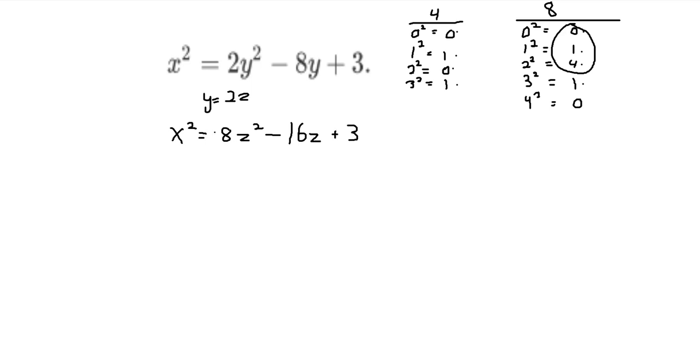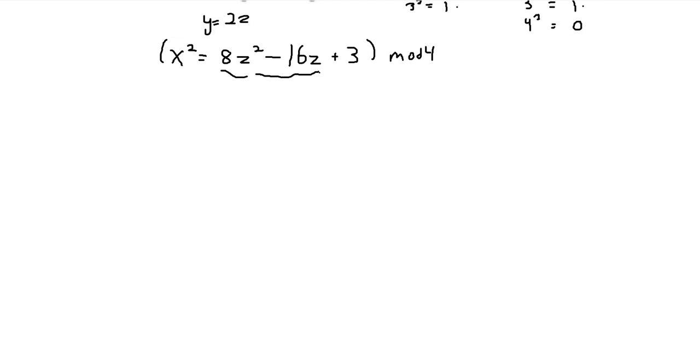And so now we see that we can take the equation, both sides, we can take it mod 4. Because 8z squared minus 16z, this is a multiple of 4. So that's just congruent to 0. So we get that x squared is equal to 3 mod 4.